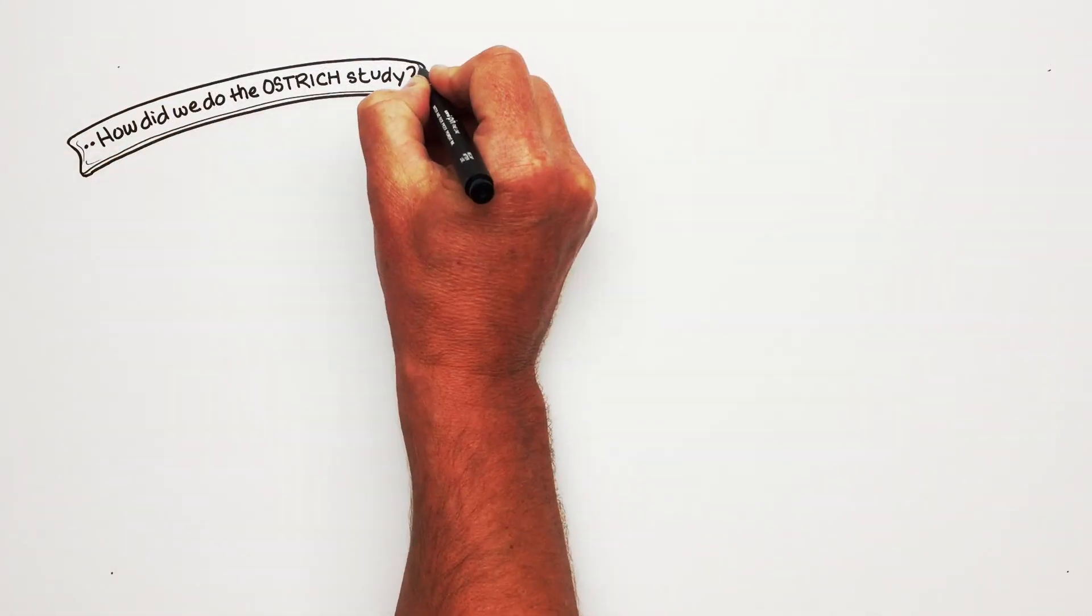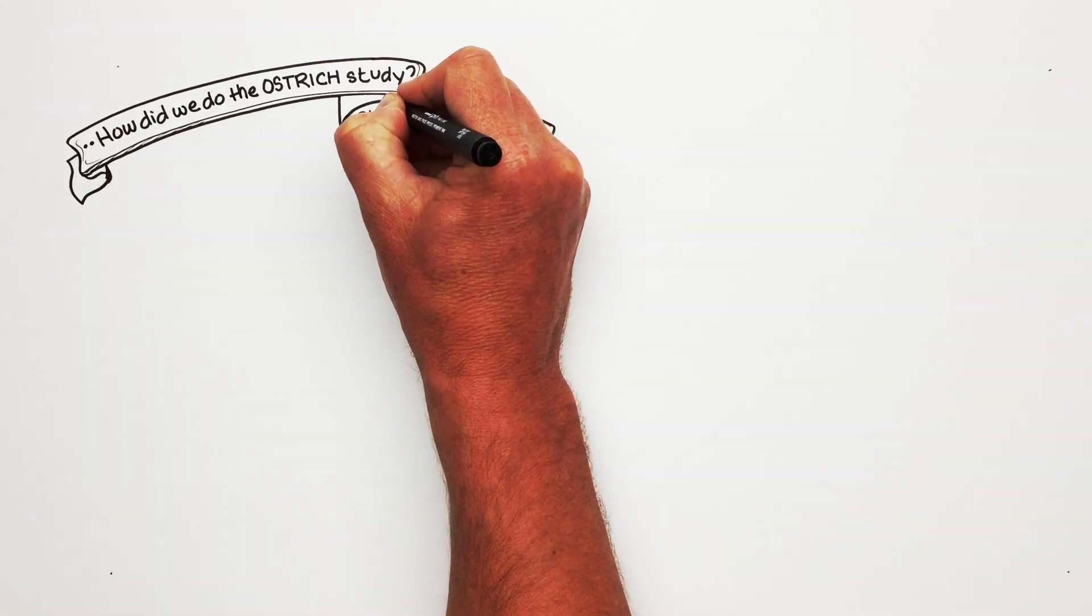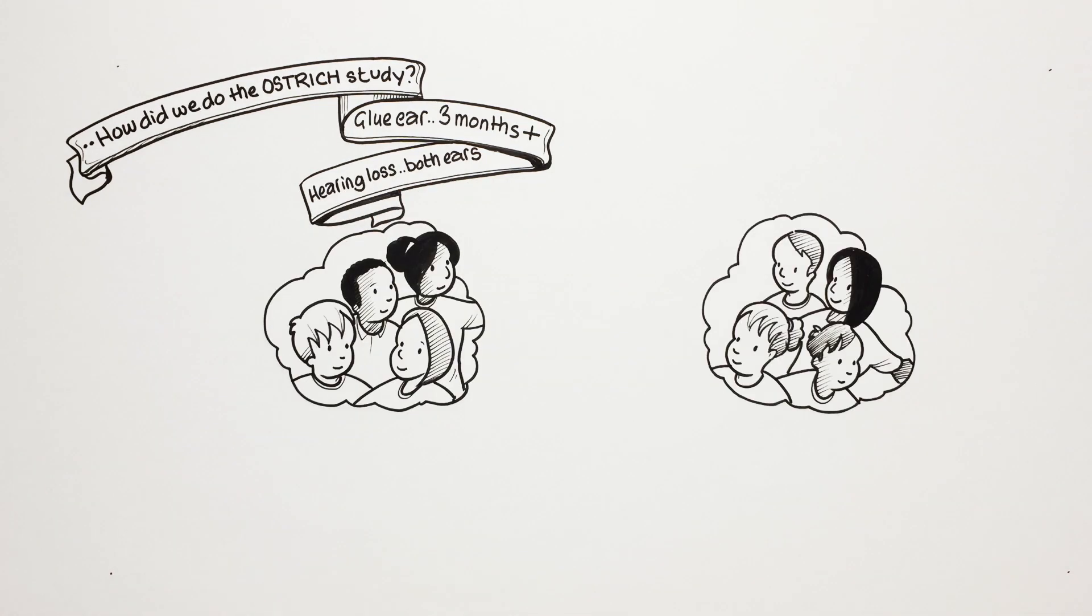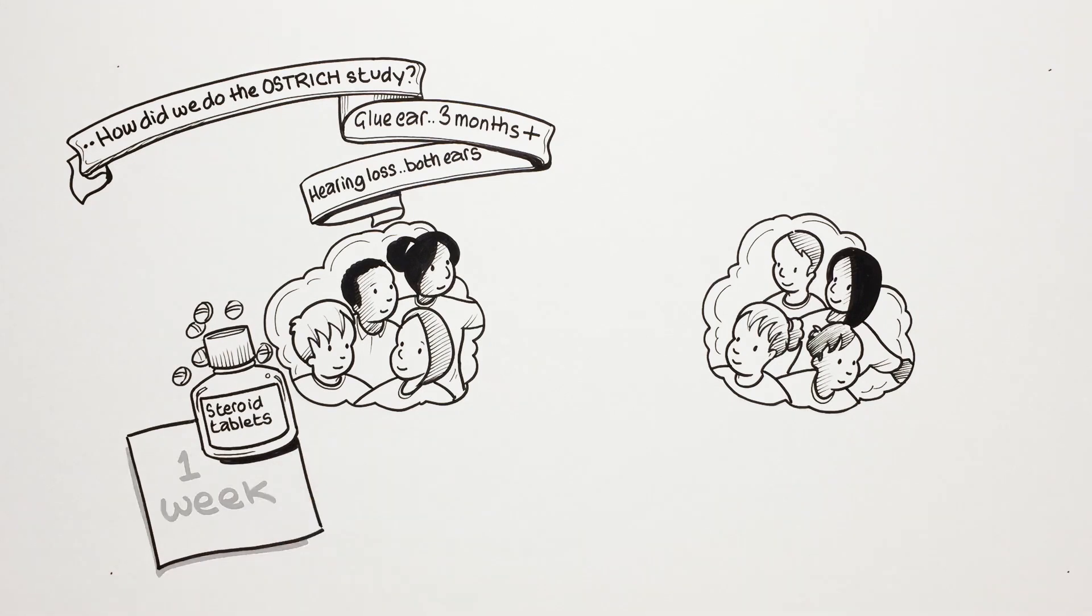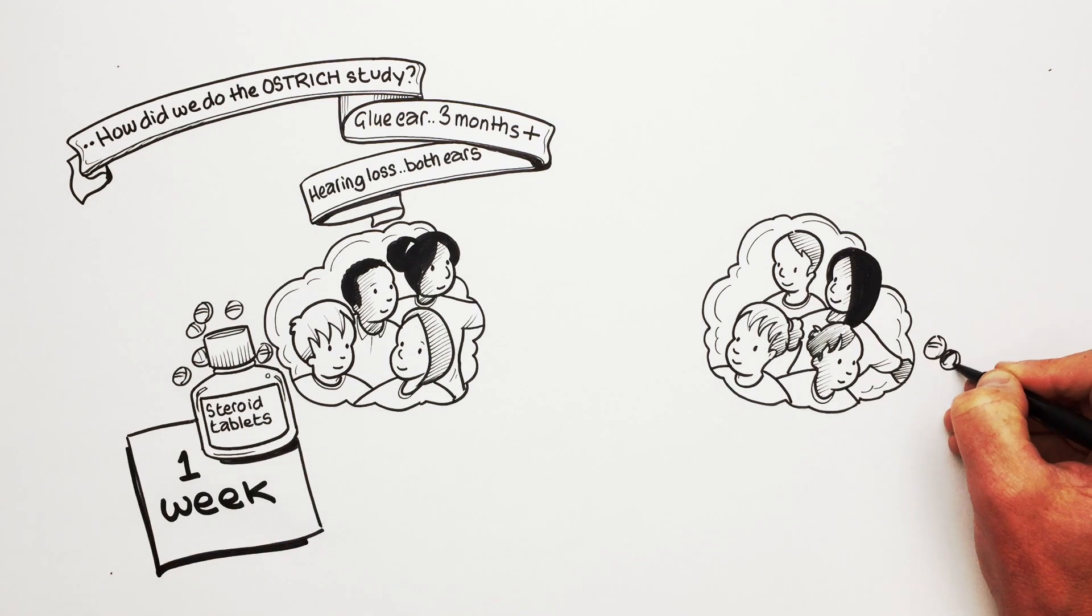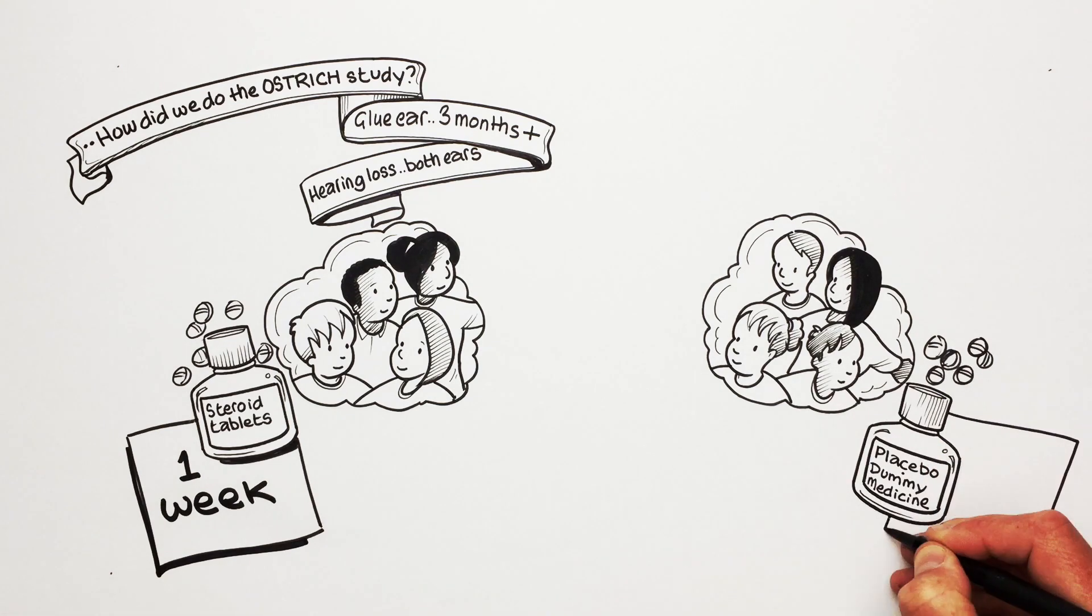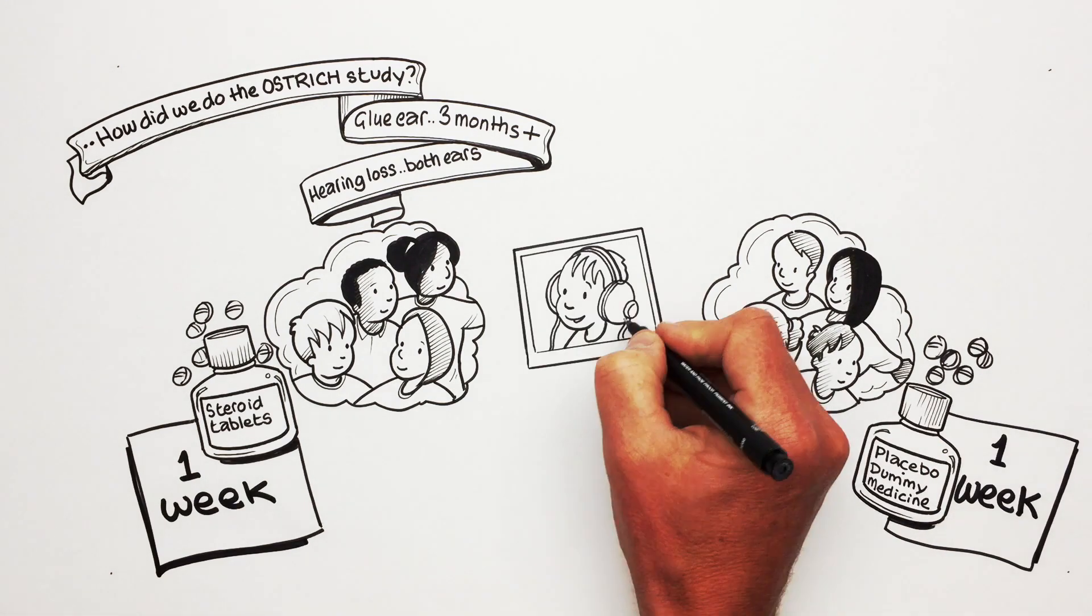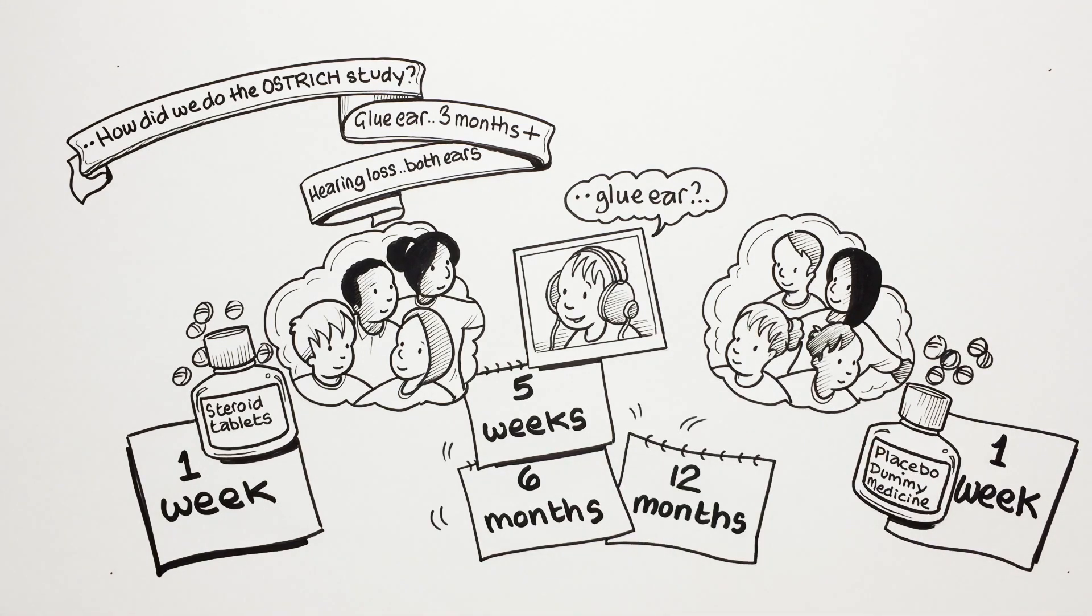So how did we do the Ostrich Study? We randomly put children who had glue ear for three months or more and hearing loss in both ears into two groups. One group took genuine steroid tablets for a week and the other group took tablets that looked like steroids but did not have any active medicine in them. These are called a placebo or dummy medicine. We tested all the children's hearing and asked them questions about how the glue was affecting them after five weeks, six months and twelve months.